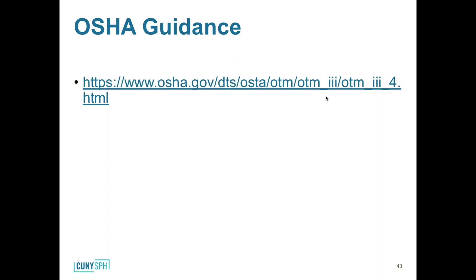A helpful OSHA guidance document goes through a scenario retroactively evaluating heat exposure for a 30-year-old landscaper who passed away due to heat stroke, showing start to finish how to calculate the WBGT index and put it into a retroactive risk assessment. This is a really good reference document and is essentially the basis for my capstone project. After a short break, we'll finish heat stress and move on to cold stress.